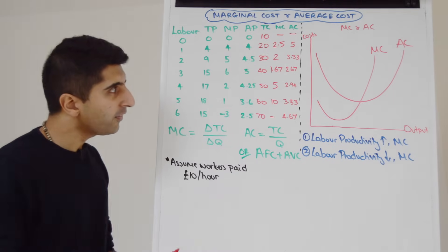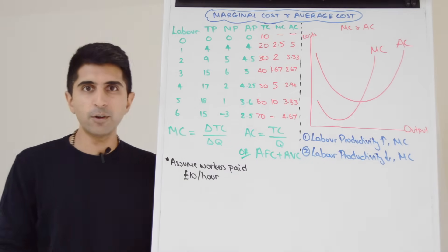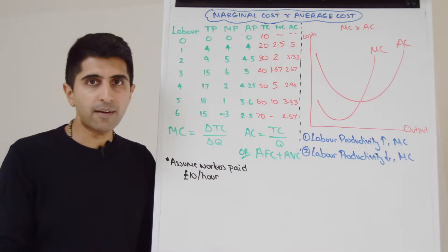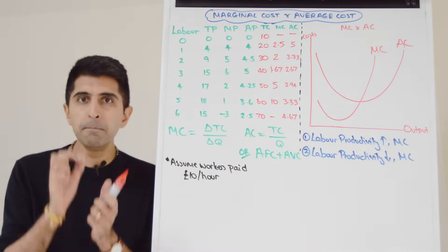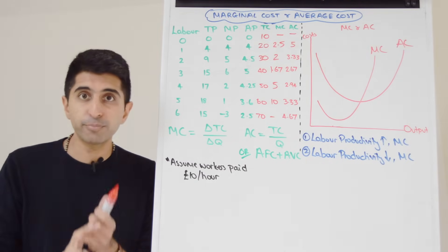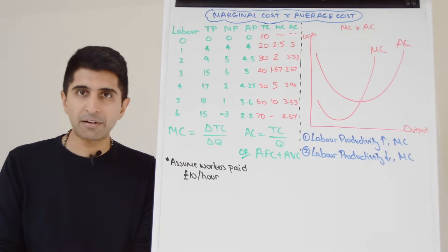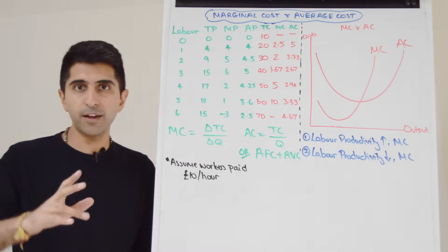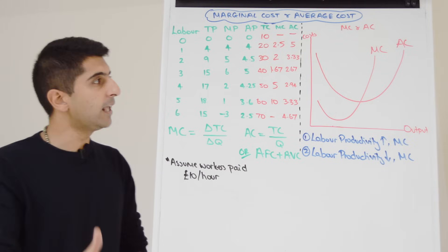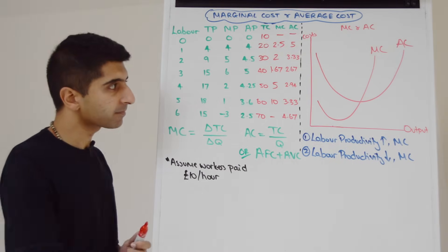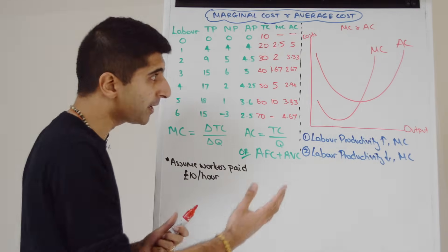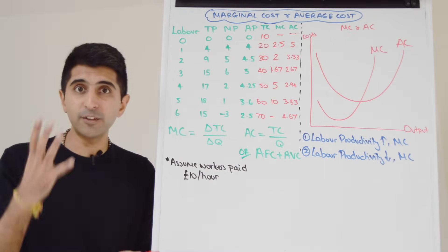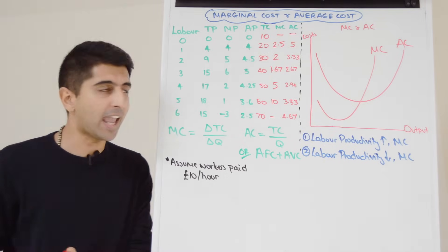If you look at these curves more carefully, we can see that marginal cost and average cost are the mirror reflections of marginal product and average product — they're exactly the same curves just flipped in reverse. And that is because they are shaped by the law of diminishing returns.